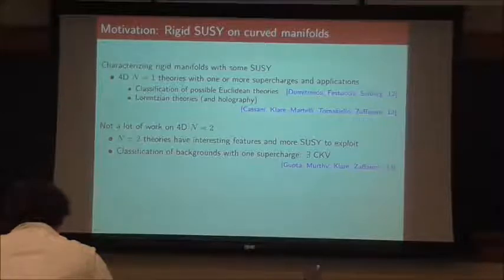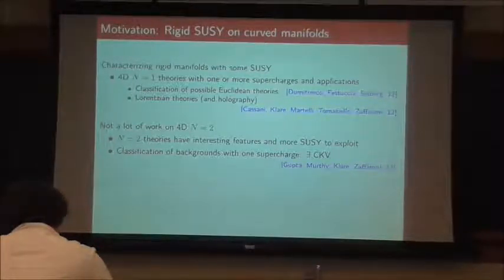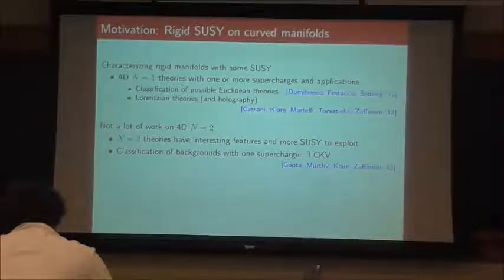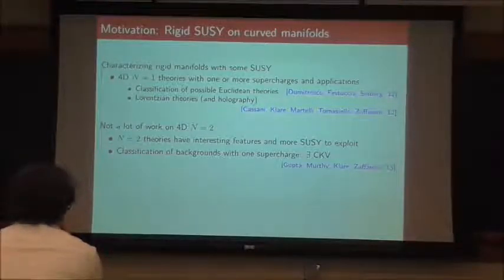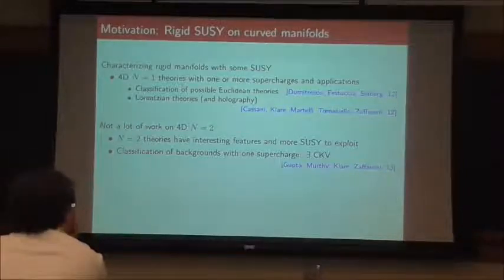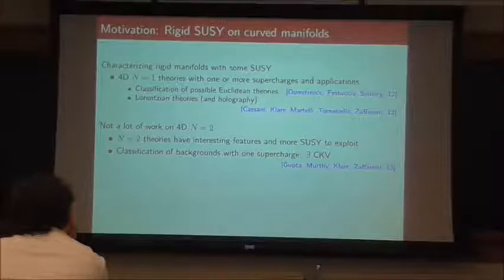Our perspective was that there hasn't been a lot of work on N=2 theories. You'd think that might be surprising because N=2 theories have interesting features — they have more supersymmetry to exploit. When we started, there were just two papers really that dealt with this: a paper by Klare and Zaffaroni that took one supercharge and N=2, and then a more indirect paper by Pioline and Murthy in the context of localization in supergravity of black holes that sort of did the same thing.